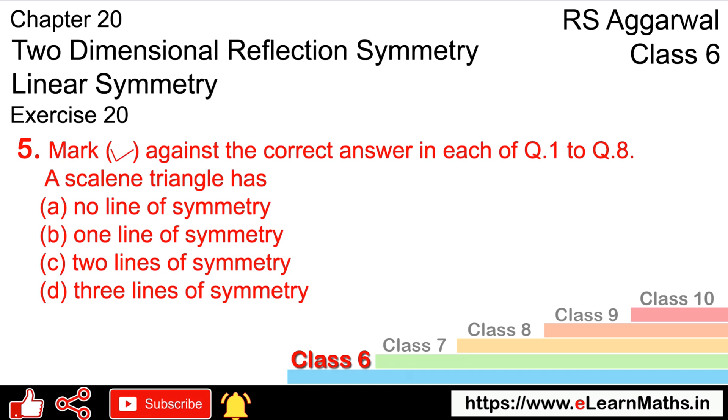Question number five is: what is a scalene triangle? A scalene triangle is one which has no equal sides — all three sides are unequal. That is called a scalene triangle.